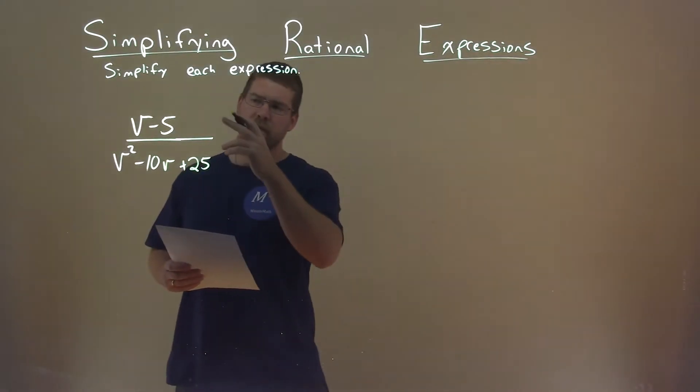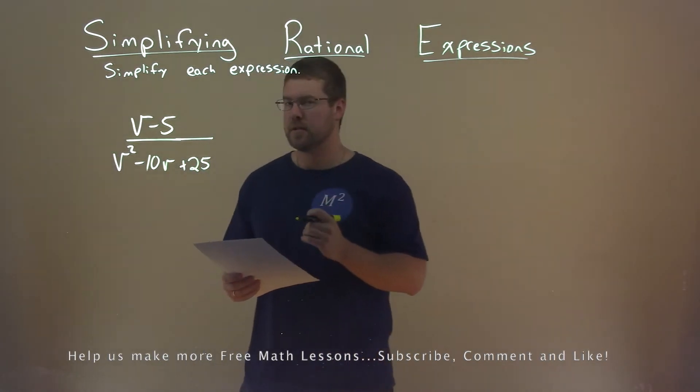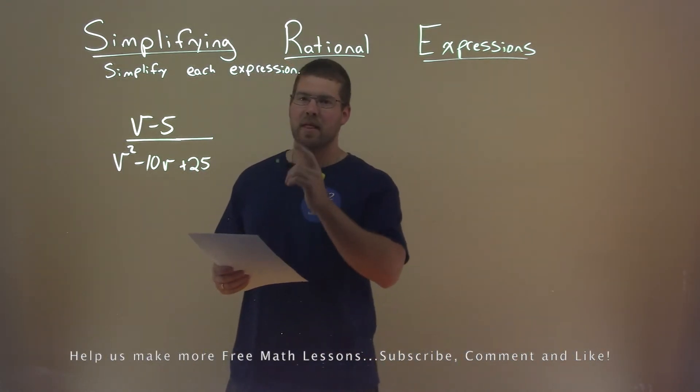We're given this problem right here, v minus 5 over v squared minus 10v plus 25, and we want to simplify this expression.